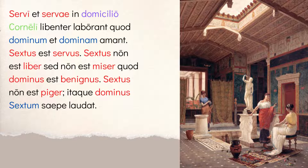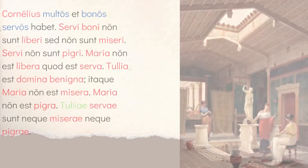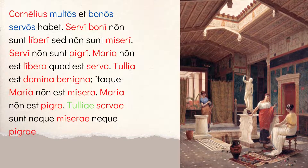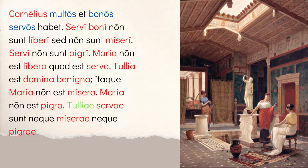Then: Cornelius multos et bonos servos habet — Cornelius has many good slaves. The two adjectives multos et bonos are both describing servos. Notice how the OS endings all match — that's the case, number, and gender match. Servos is accusative masculine plural, so multos and bonos are both accusative masculine plural. The endings couldn't possibly describe Cornelius, which is nominative singular, so you're not saying 'good Cornelius has slaves' — you're saying Cornelius has many good slaves.